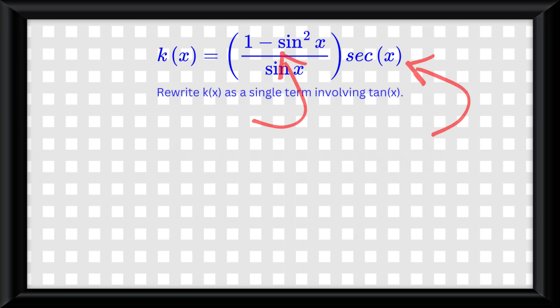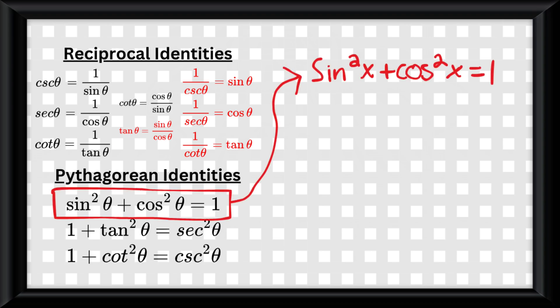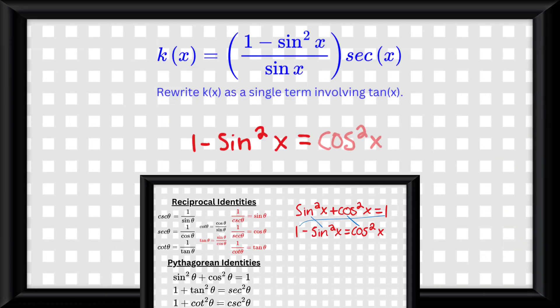So first, I want to try and simplify each term. In the numerator, we have 1 minus sine squared of x. But here's the thing, we know sine squared of x plus cosine squared of x is equal to 1. So if we rearrange this, we know 1 minus sine squared of x is equal to cosine squared of x.